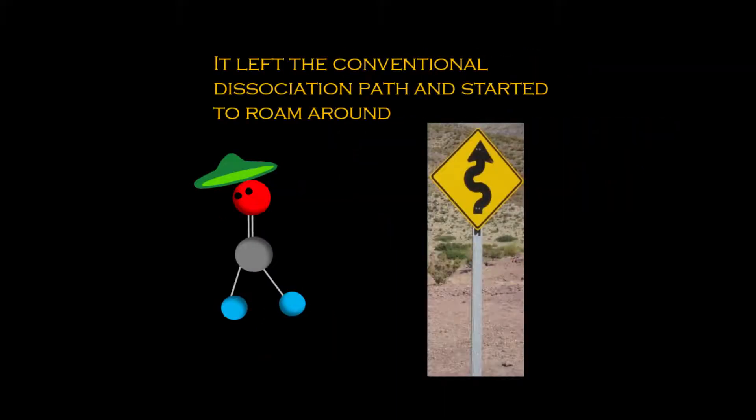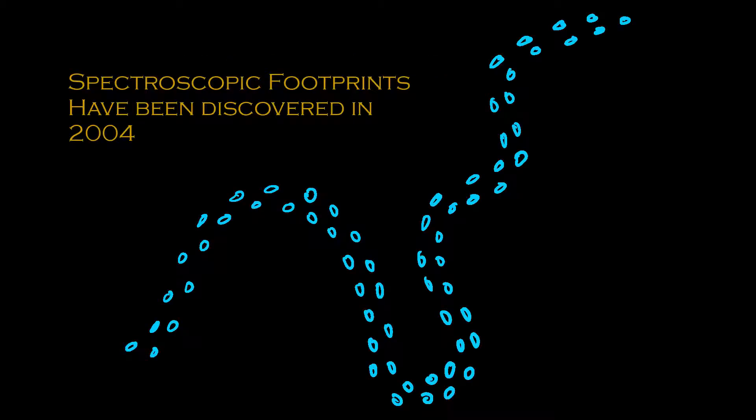It left the conventional dissociation path and started to roam around. This could not remain unobserved. Spectroscopic footprints have been discovered in 2004.